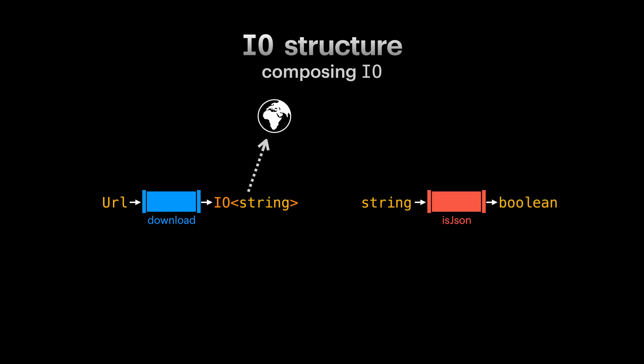Let's look at an example. Let's say we have a download function that receives a URL and returns an IO of a string. We have another function isJSON that receives a string and returns a boolean. What we want is to compose these two functions, so we can check if the downloaded string from a URL is a JSON or not. For the sake of this video, let's assume our download function is synchronous. But the output of download function does not match the input of isJSON function. So how can we compose this?